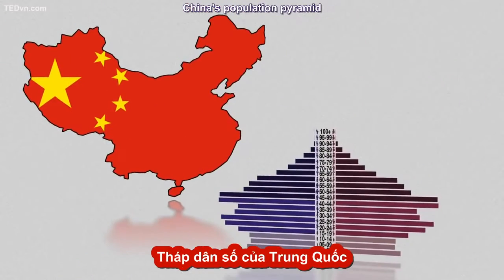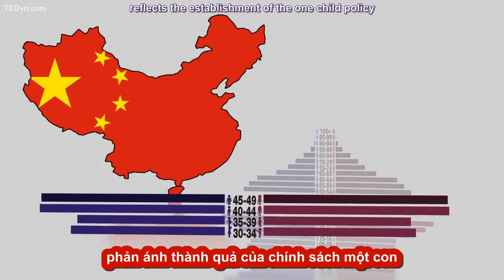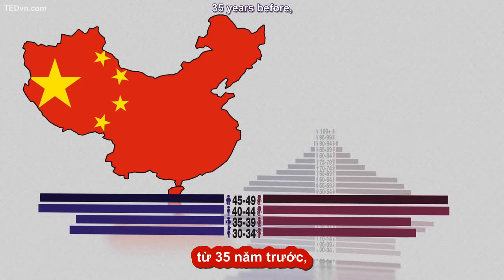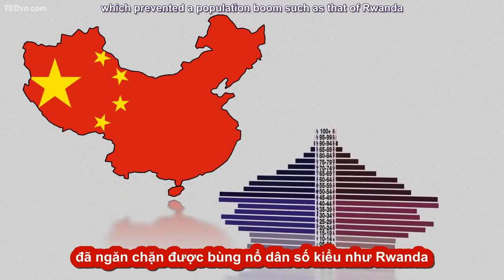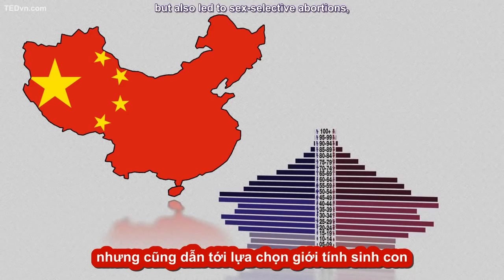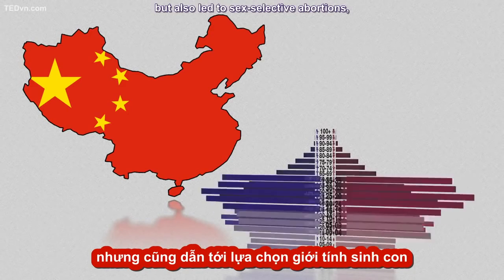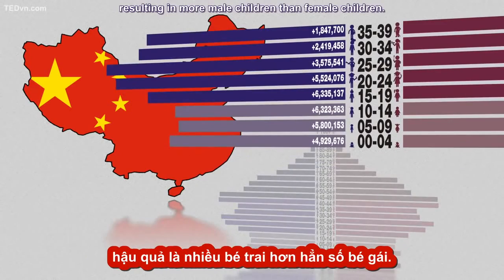China's population pyramid reflects the establishment of the One Child Policy 35 years before, which prevented a population boom such as that of Rwanda, but also led to sex-selective abortions, resulting in more male children than female children.